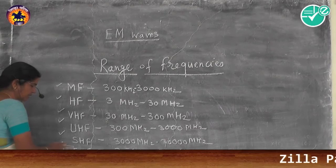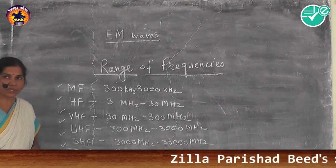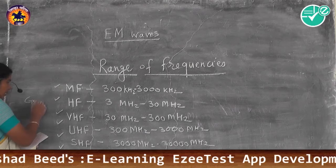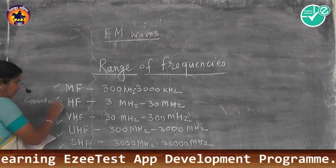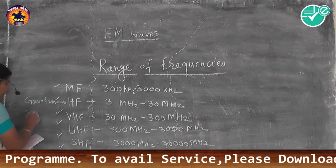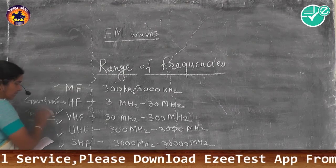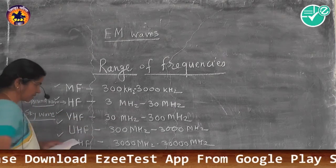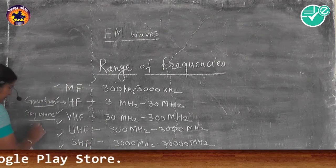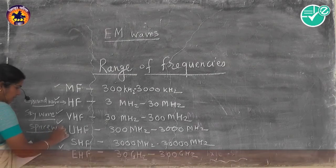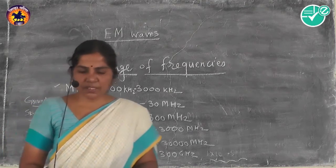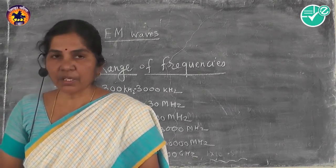So the range of frequencies — MF, HF, VHF, UHF, SHF, and EHF — are useful in radio communication. For ground wave propagation, the frequency range 3 megahertz to 30 megahertz is used. For sky wave propagation, the range 30 megahertz to 300 megahertz is used. For space wave propagation, UHF in the range 300 megahertz to 3000 megahertz is used.